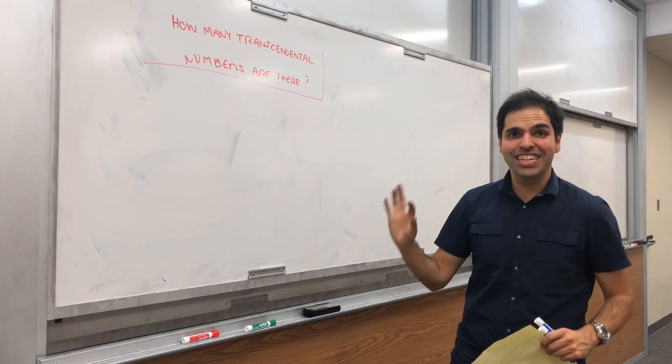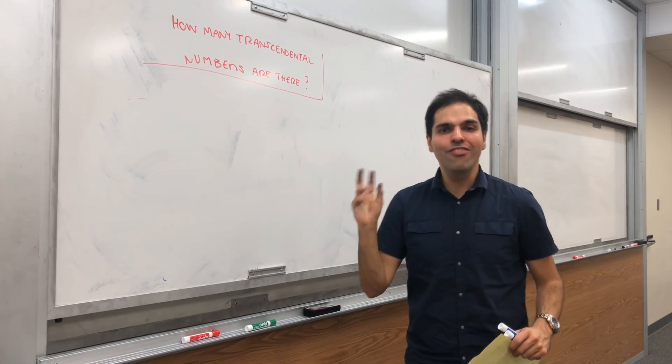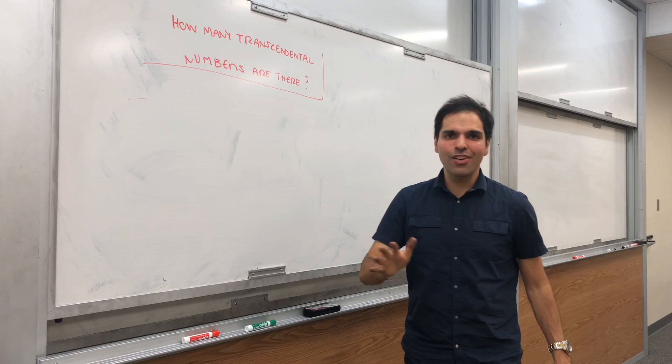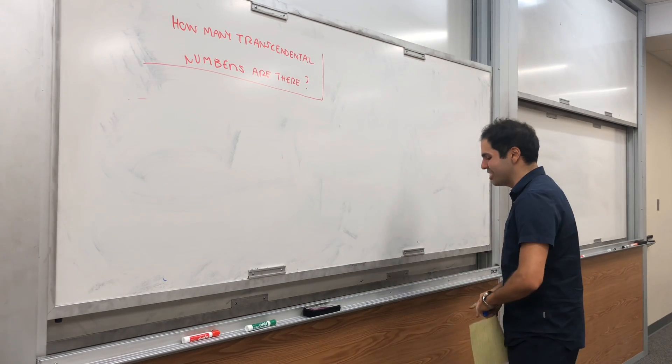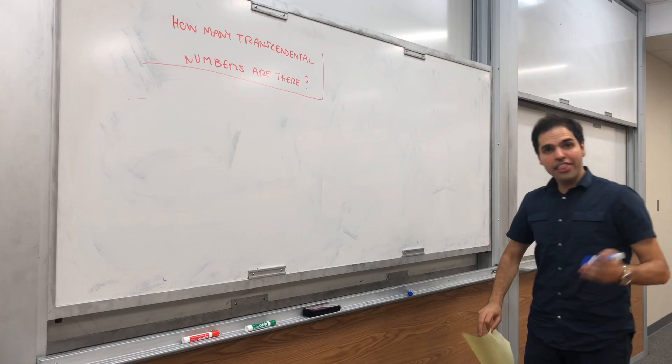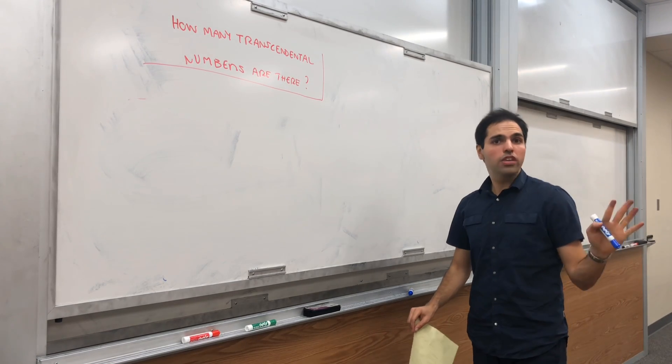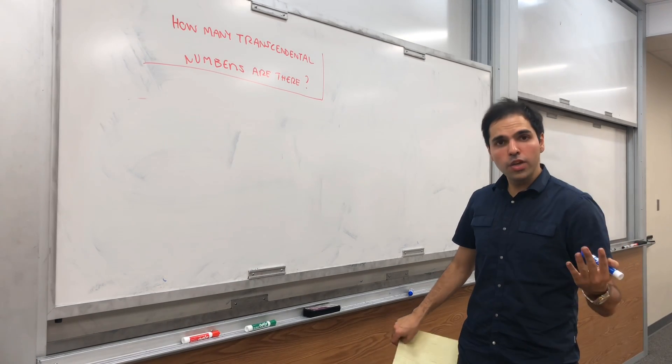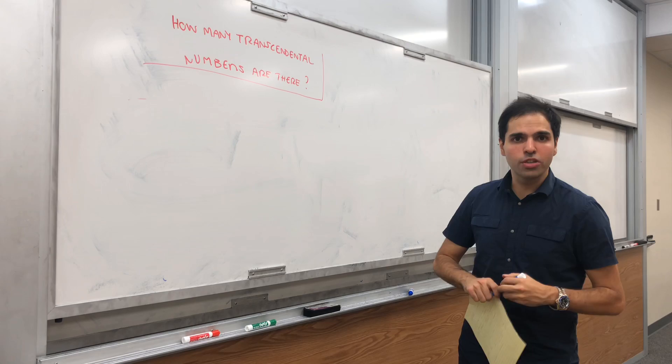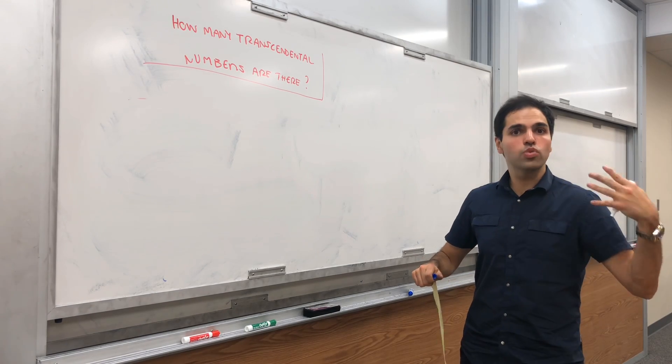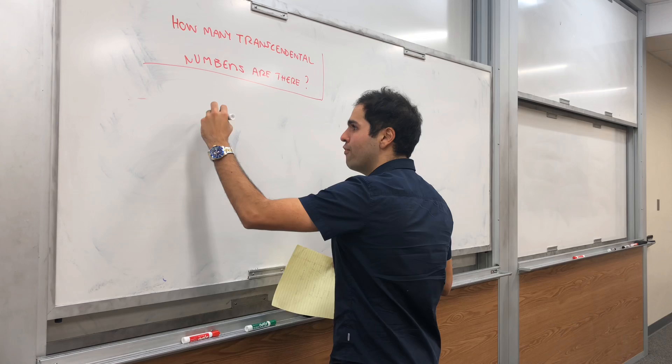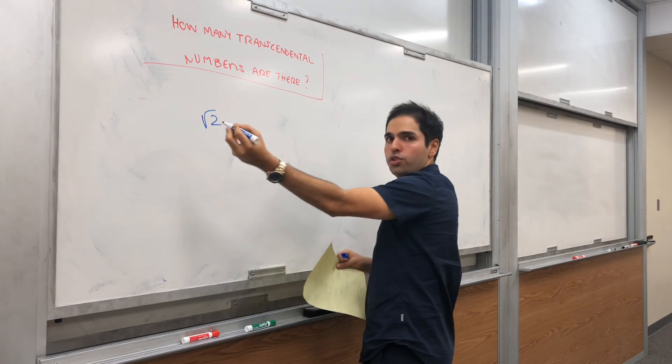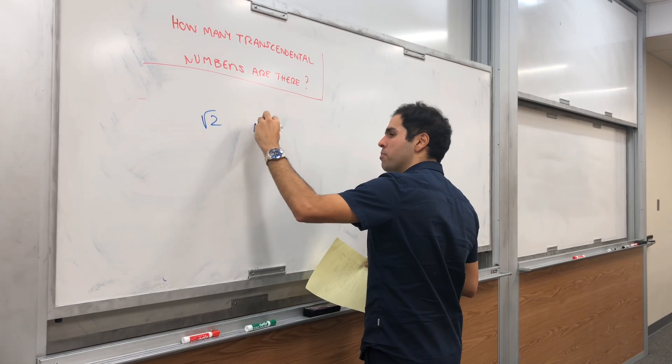Thanks for watching. Today I want to show you a very neat fact. My office mate actually suggested this. It's really cool because there are in this world two types of real numbers. On the one hand, there are what are called algebraic numbers, which are just roots of polynomials with integer coefficients. For example, square root of 2 is an algebraic number.